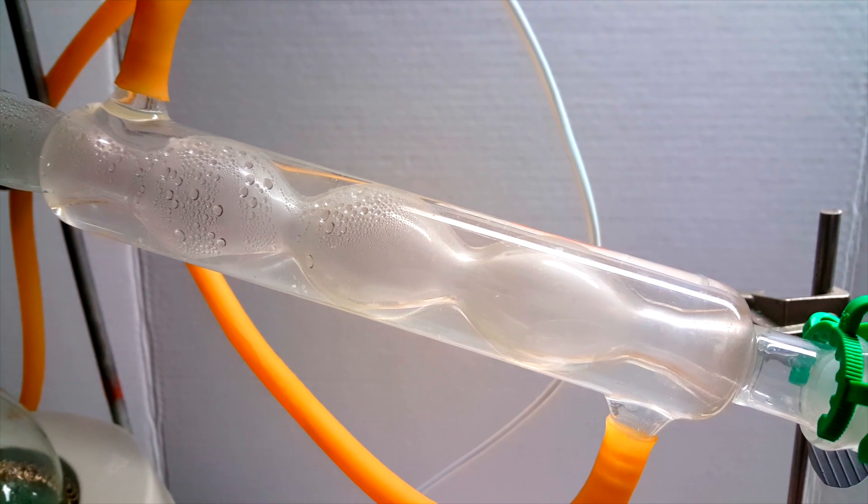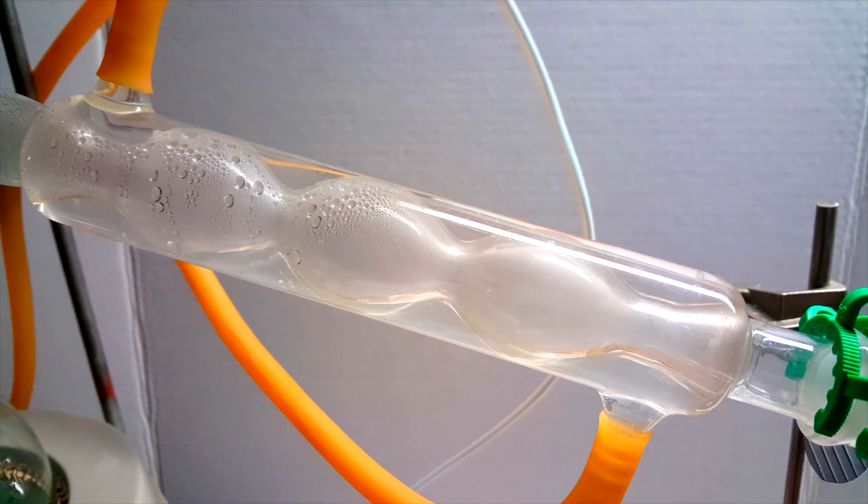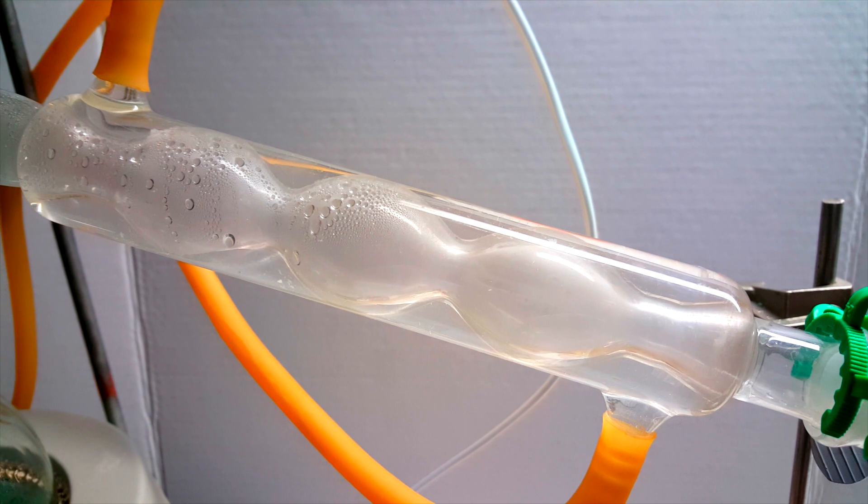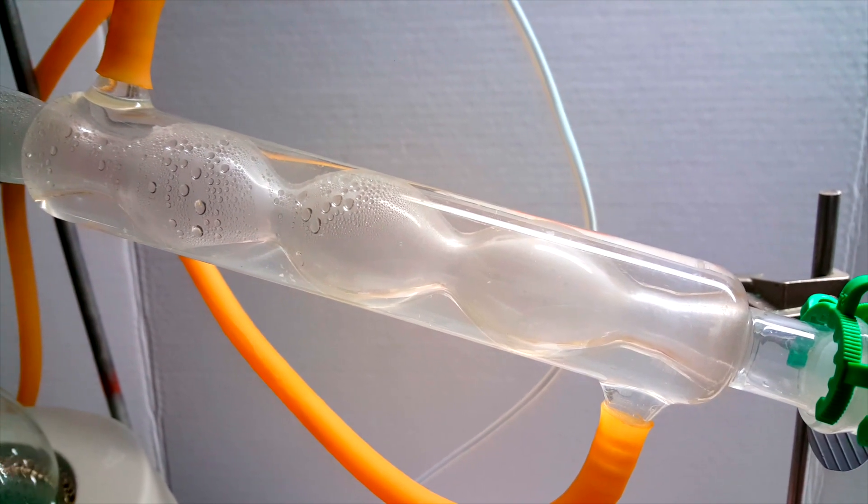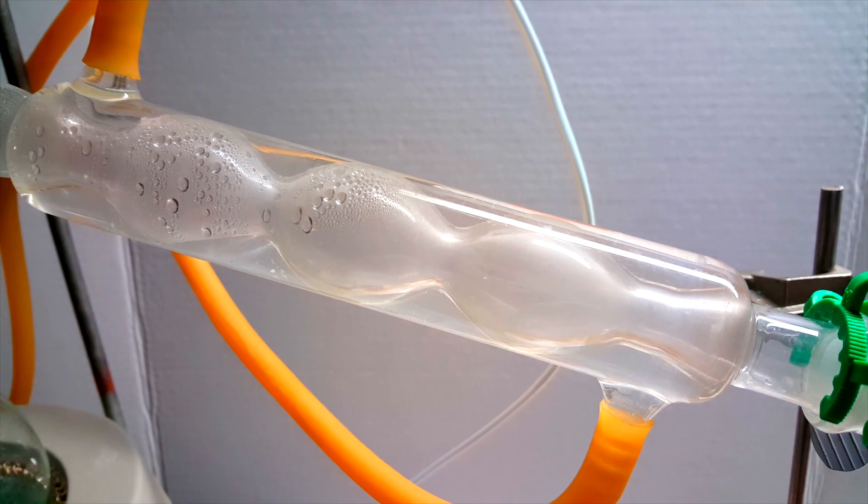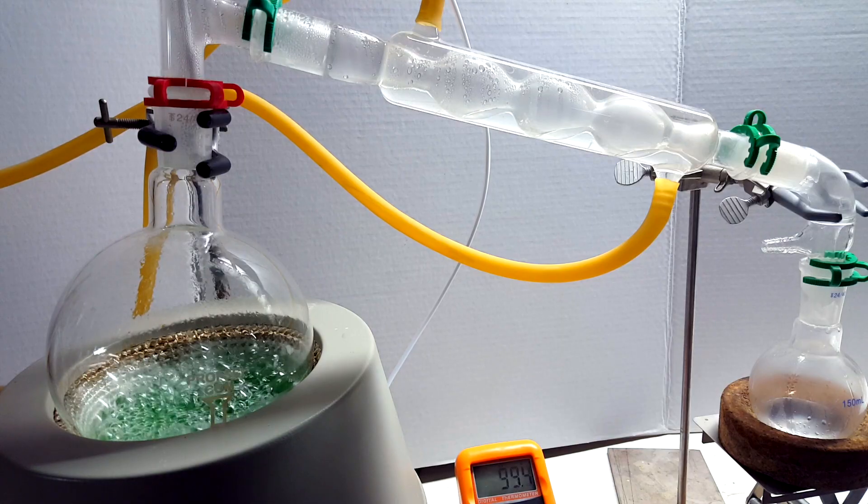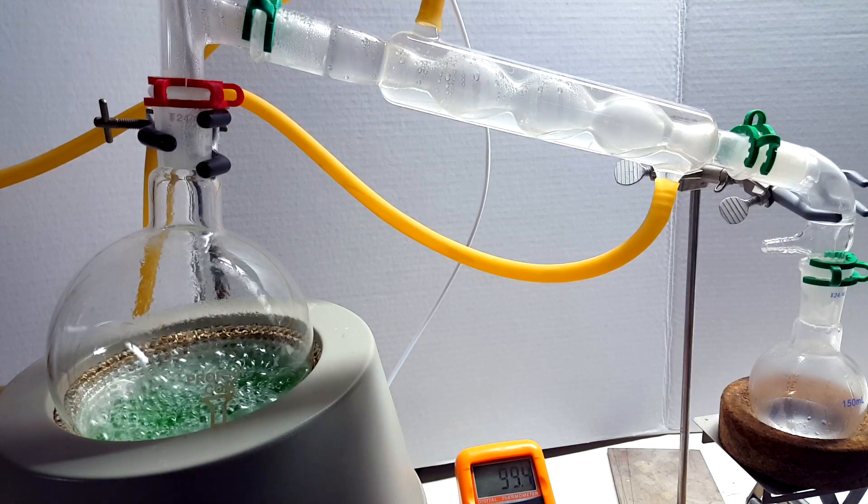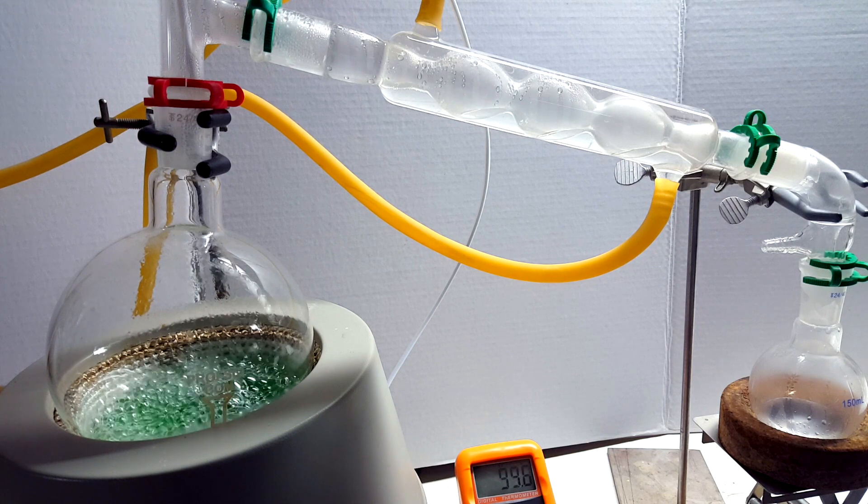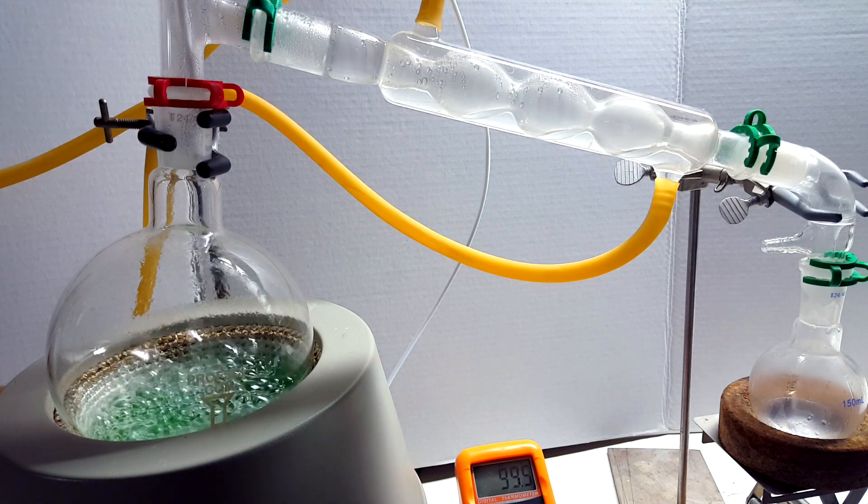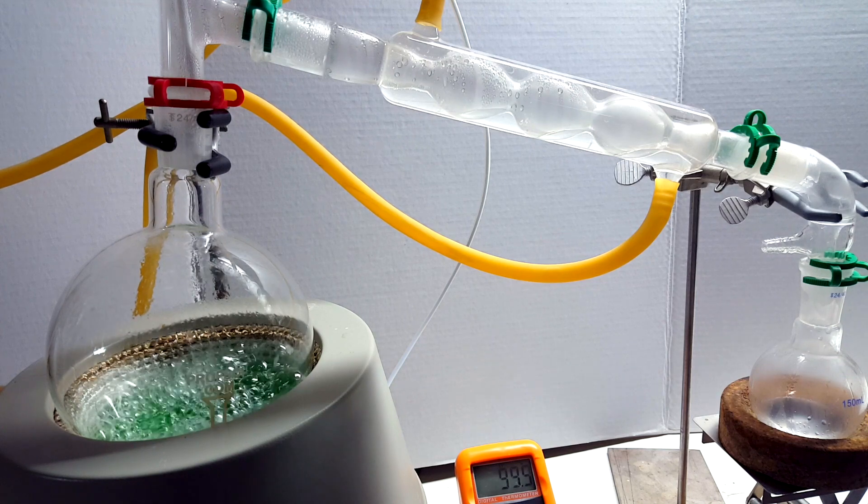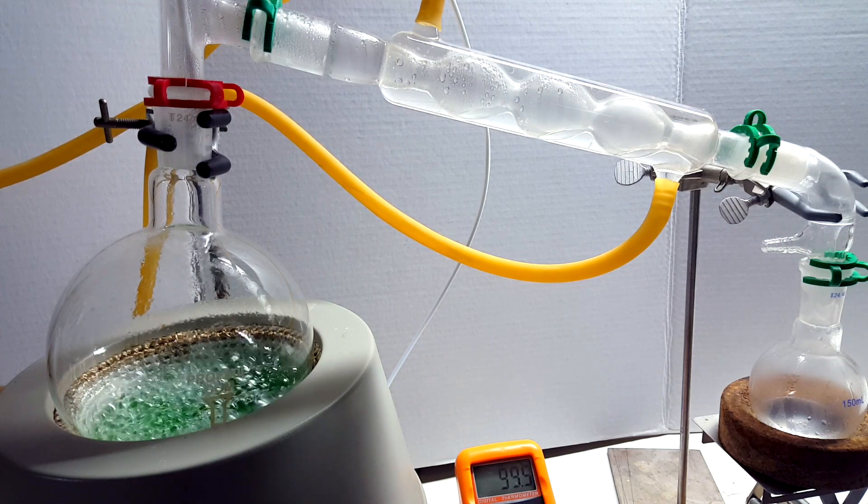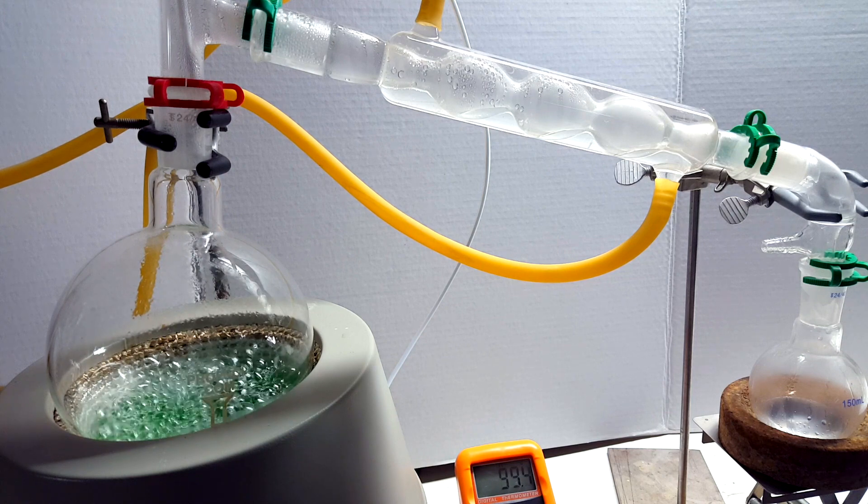As the liquid condensed, you can see that it collected slowly within each bubble. Then as the volume within the bubble exceeded the capacity, it fell down to the next, until it ultimately ends up in the receiving adapter. These first drops started coming over at about 99.5°C. The distillation continued at this temperature for quite a while, and was very well behaved as compared to last time. Obviously, the improvements I made in the methods were working much better.